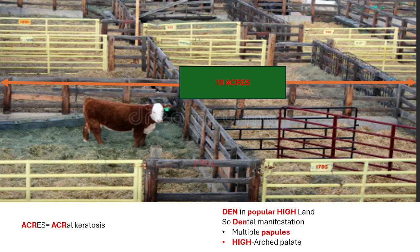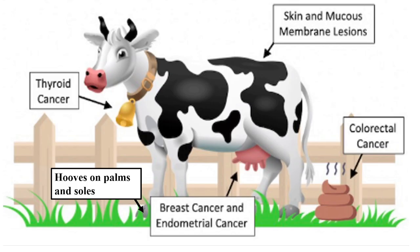This land, or den, where the cow lives was located in a very popular highland. Let's decode this: 'den' stands for dental manifestation, 'popular' stands for multiple papules affecting the gingiva, dorsal tongue, and buccal mucosa, and 'highland' stands for high arch palate. So for the oral manifestations of Cowden Syndrome: dental manifestations, multiple papules, high arch palate, and some cases are also associated with dental caries and periodontitis.